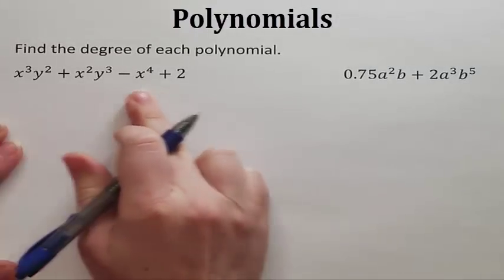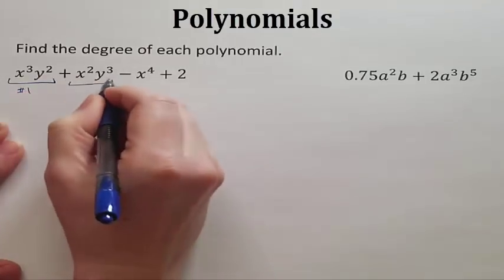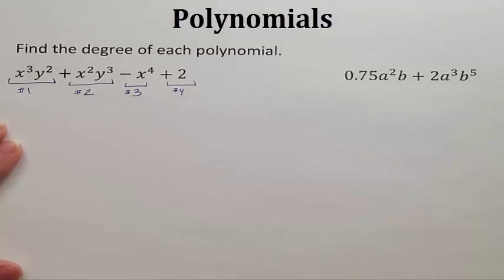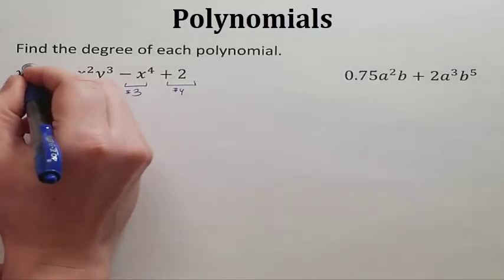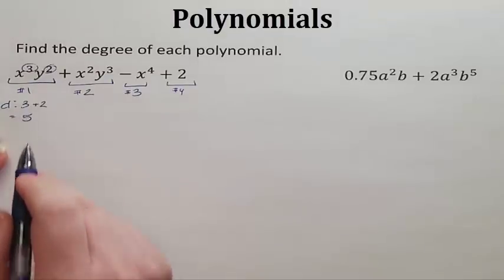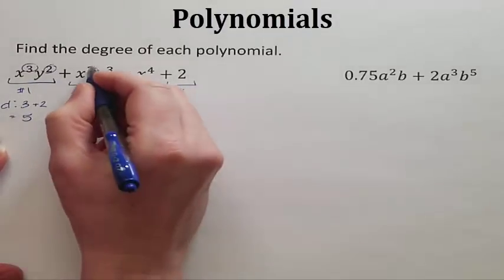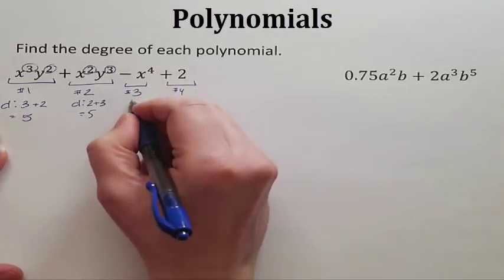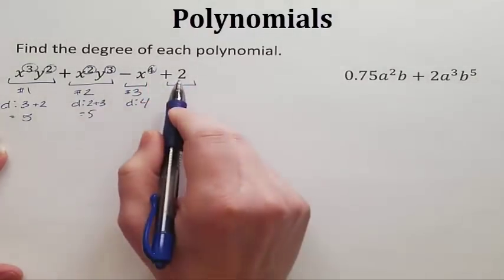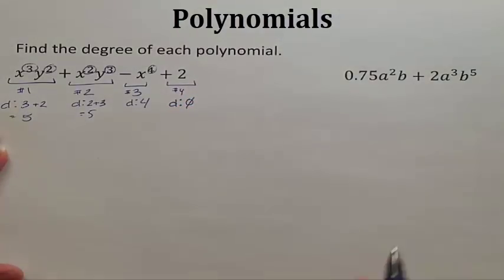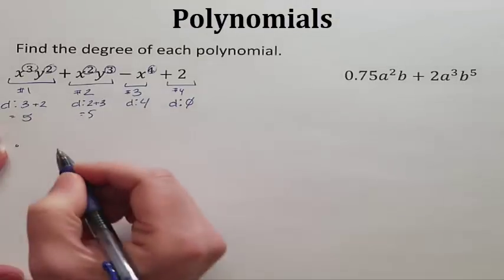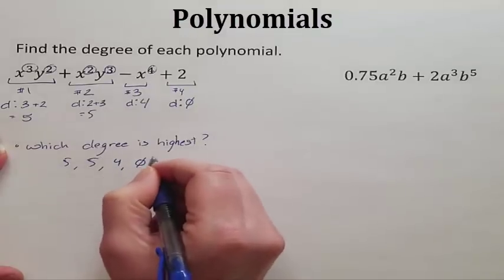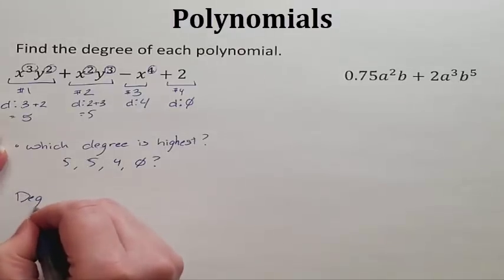Let's practice a few more times. This polynomial has 4 monomials. Monomial 1 has exponents 3 and 2, so degree 5. Monomial 2 has exponents 2 and 3, so degree 5. Monomial 3 has only one exponent, so degree 4. Monomial 4 has no variable, so degree 0. Comparing 5, 5, 4, and 0 — the highest degree is 5, so the degree of this polynomial is 5.